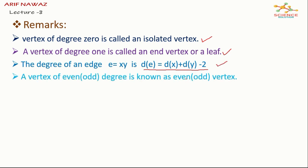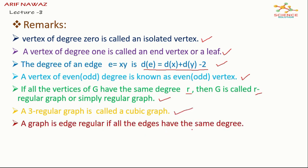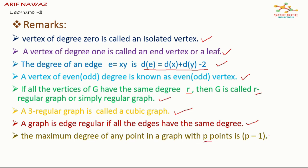A vertex of even or odd degree is known as even or odd vertex. If all the vertices of g have the same degree r then g is called r regular graph or simply regular graph. A three regular graph is called a cubic graph. A graph is edge regular if all the edges have the same degree. The maximum degree of any point in a graph with p points is p minus one.